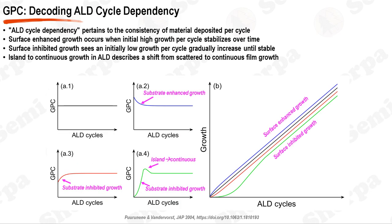In a typical ALD cycle, a gaseous precursor is introduced to the substrate surface, where it undergoes a self-limiting surface reaction to form a monoatomic layer. The exact amount deposited is determined by the available reactive sites on the substrate surface. Under ideal circumstances, the GPC should remain constant irrespective of the number of ALD cycles. However, there are three distinct scenarios where the GPC deviates from this ideal behavior: surface-enhanced growth, surface-inhibited growth, and island to continuous growth.